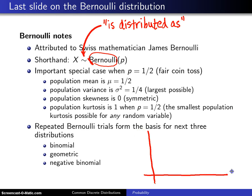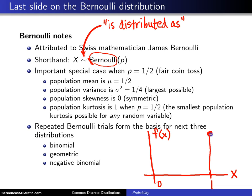For the Bernoulli distribution, x takes on the values zero and one. When you look at f of x, there is a probability p of what we generically refer to as success, and there is a probability 1 minus p of what we generically refer to as failure.